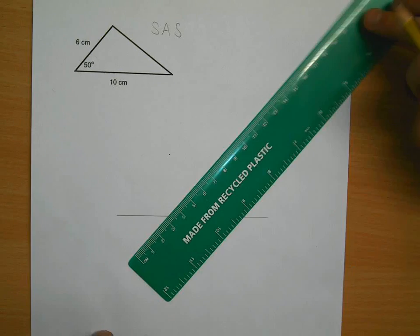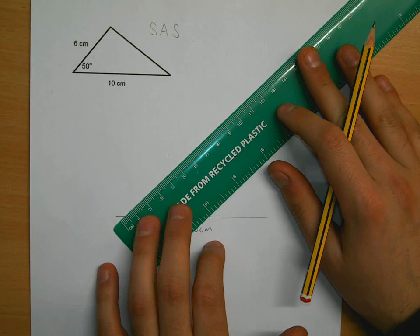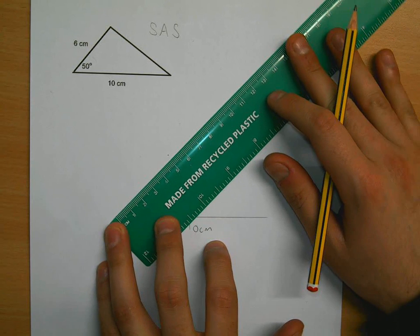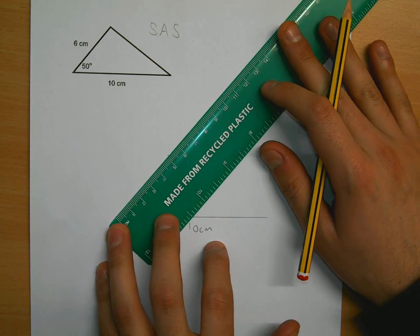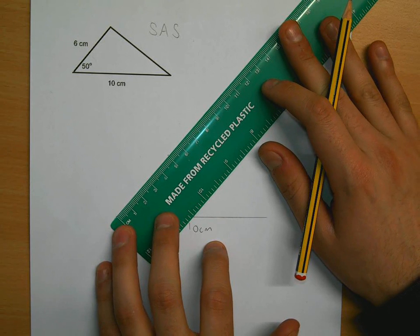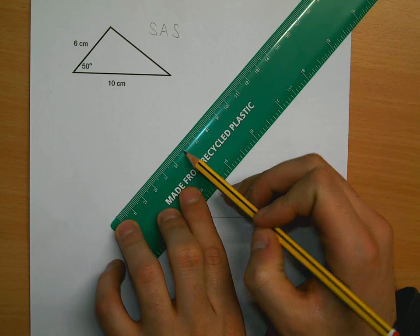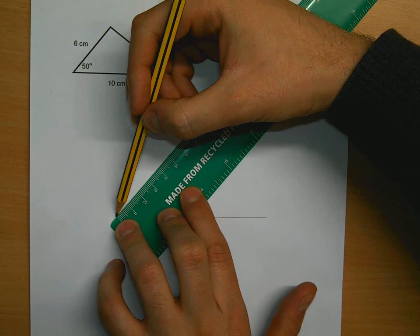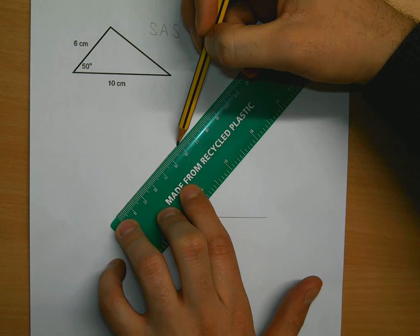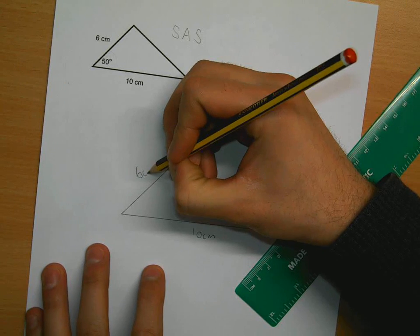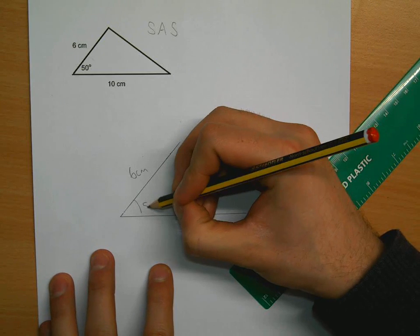Now this line has to be 6cm. If I line it up from the edge of my line to that dot, that is perfectly in line. I am going to draw this line so that it is 6cm long, going through that point all the way to 6cm. So that is 6cm at 50 degrees.